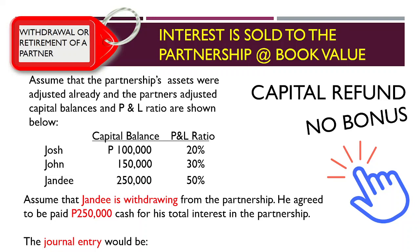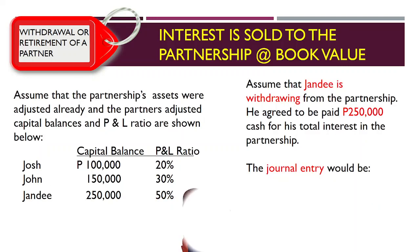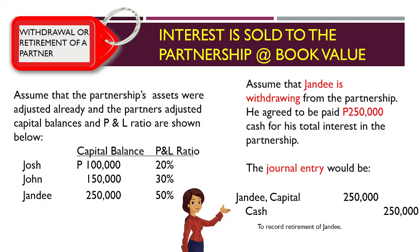Assume that Jandy is withdrawing from the partnership and he agreed to be paid $250,000, which is equal to the book value. The journal entry is to debit the capital account of the withdrawing partner Jandy and credit cash $250,000, with the explanation: to record retirement of Jandy.